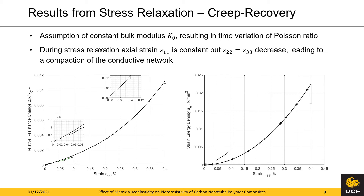Here the relative resistance change is also slightly lower than during the initial loading phase due to the increased transverse compaction. This behavior is not observed when a constant Poisson's ratio is assumed. On the right side we see the corresponding strain energy density. Despite the increasing transverse compaction, the total strain energy still decreases due to the stress relaxation. The recovery portion in the lower left corner indicates a return to a state of almost zero strain.